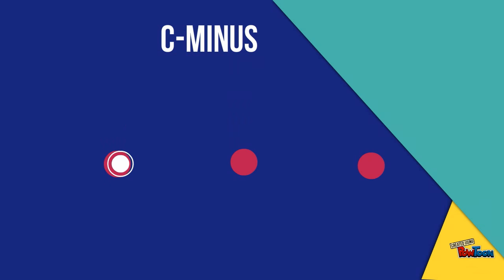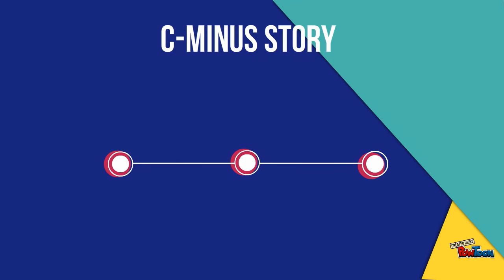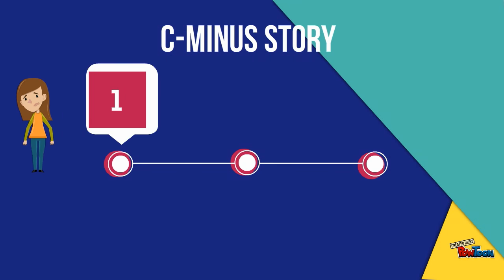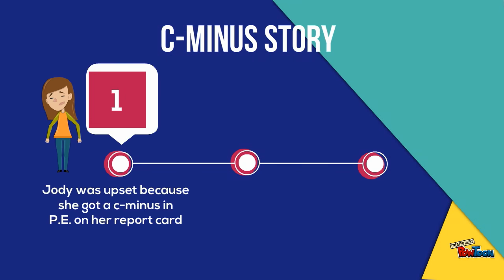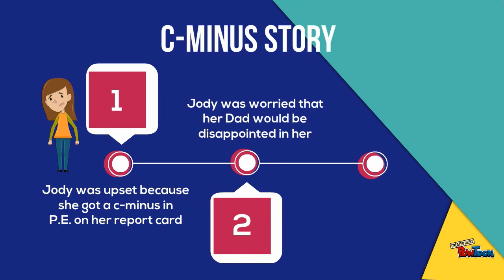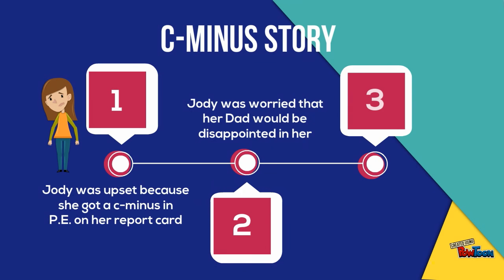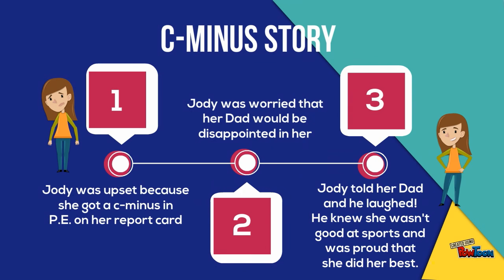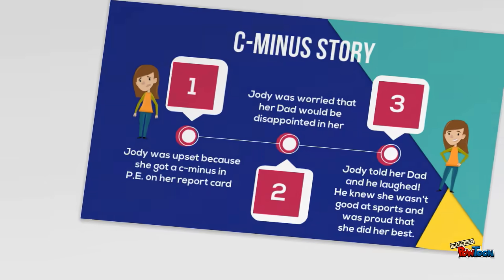Let's practice with an example from the C- story. In this story, Jodi was upset because she got a C- in PE on her report card. She was worried that her dad would be disappointed in her. When she told her dad, he laughed. He knew she wasn't good at sports, but was proud that she did her best.